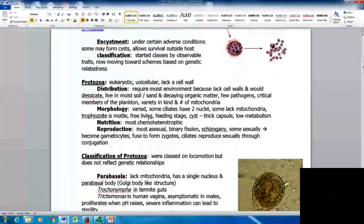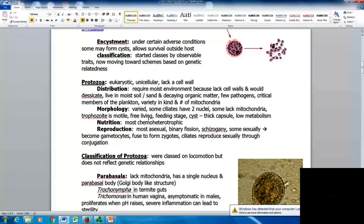Protozoa are eukaryotic cells that are unicellular and lack a cell wall. They require a moist environment because they lack cell walls. If they're not in a moist environment, they'll desiccate. They will live in moist soil, sand, decaying matter. A few are pathogens. They can be critical members of plankton. You can see varieties in the kind and number of mitochondria. Their morphology is varied. The trophozoite is the modal free-living feeding stage. The cyst has a thick capsule and is a low metabolism stage.